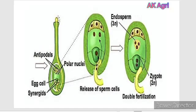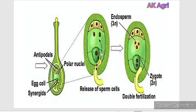As this pollen grain comes in contact with the receptive stigma, it germinates and starts to produce a pollen tube. All along the pollen tube, it releases two sperm cells. Finally, this pollen tube enters the embryo sac from the micropylar region and it releases two sperm cells into the embryo sac.